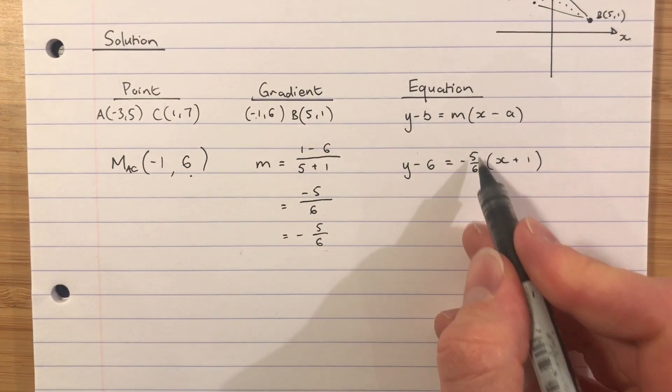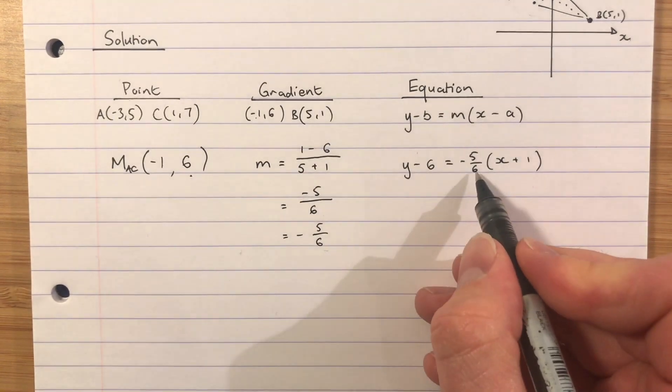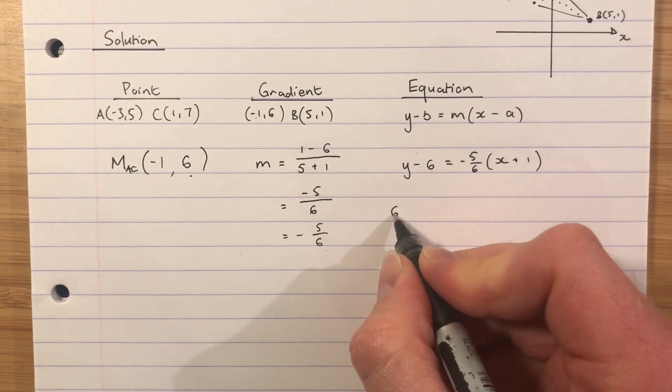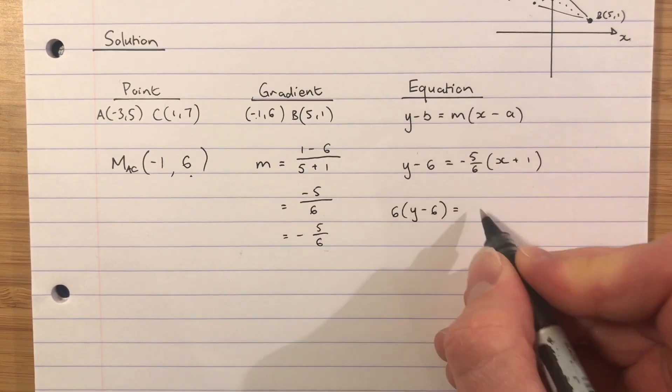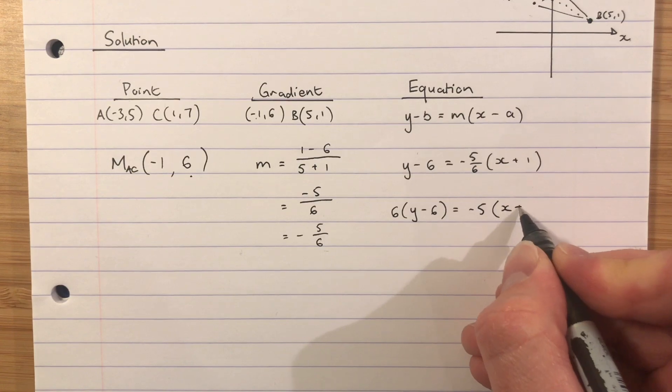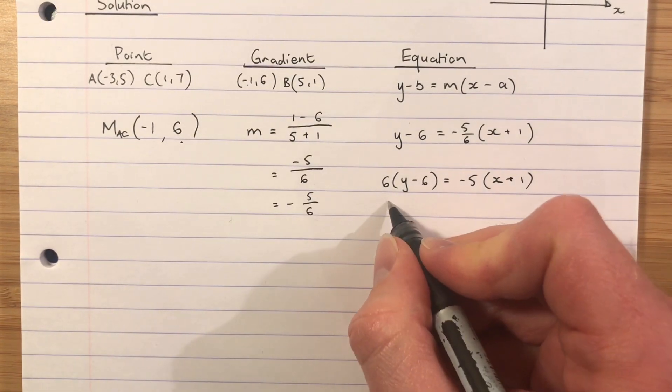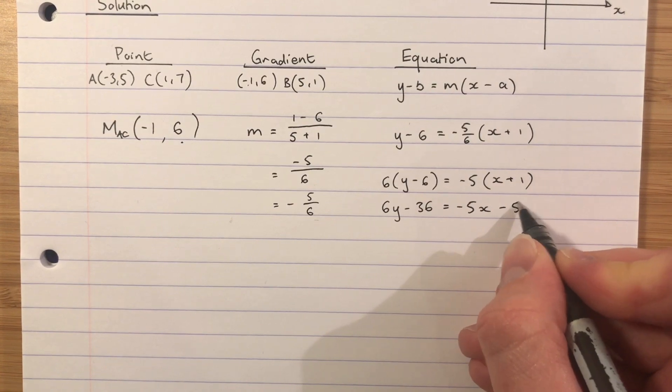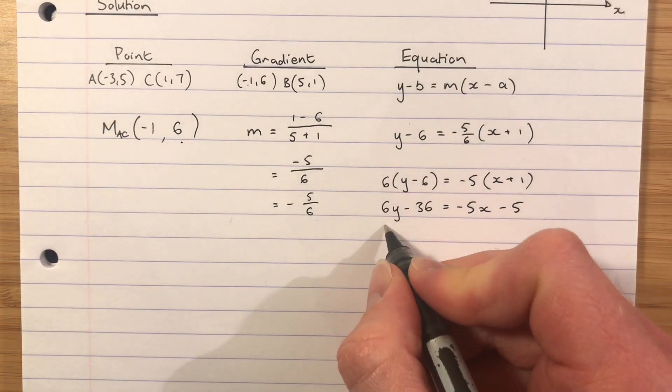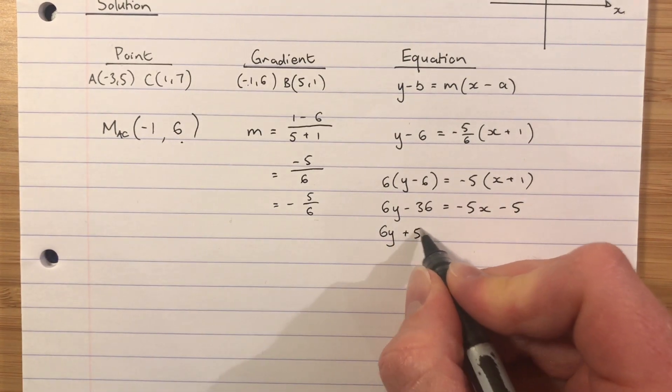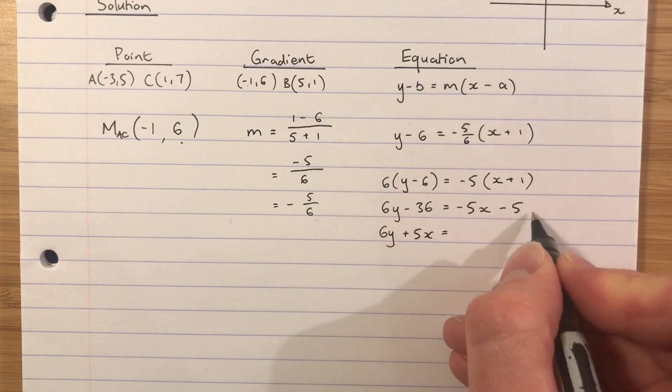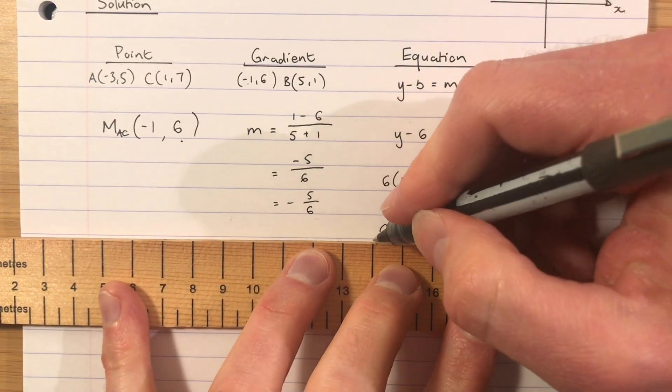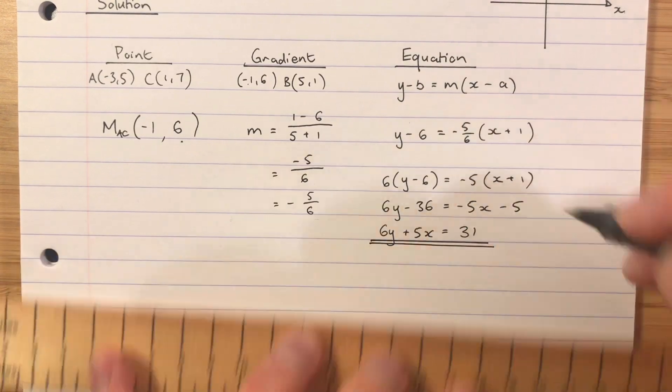Let's deal with this fraction. I don't want to multiply out a fraction. The 6 is dividing on this side, let's do the opposite operation to this side. The opposite of dividing by 6 is multiplying by 6. So that whole side will get multiplied by 6, and I'll leave the -5 on this side multiplying the (x + 1). Multiplying out those brackets, I'm going to get 6y - 36 = -5x - 5, which will give me a final answer of 6y + 5x = 31. So the equation of the median from B is 6y + 5x = 31.